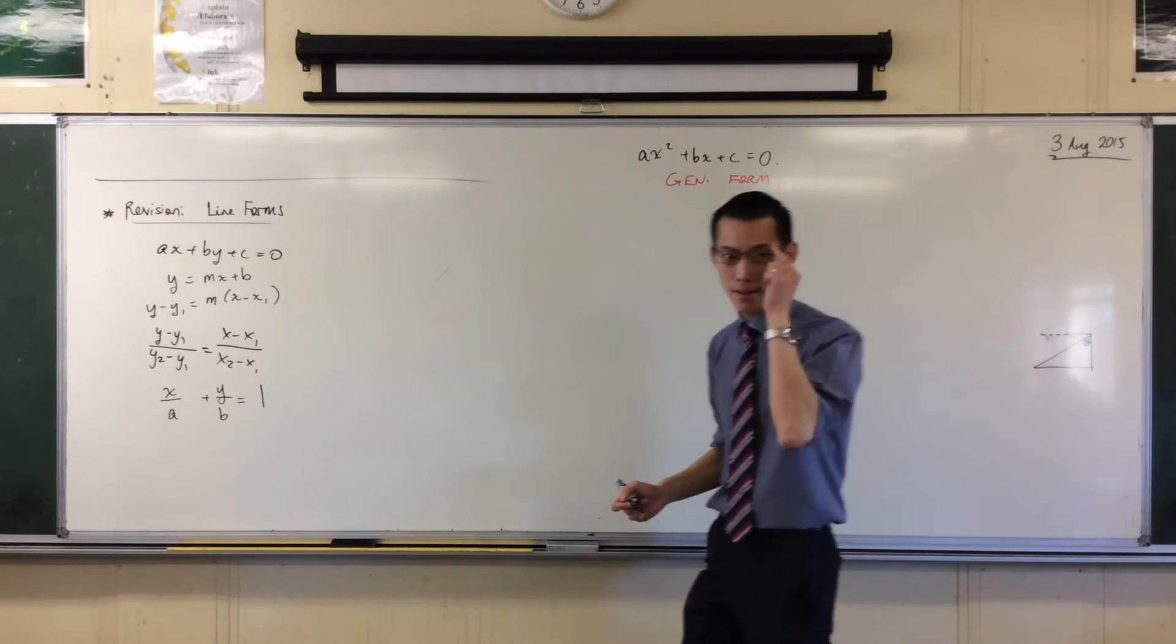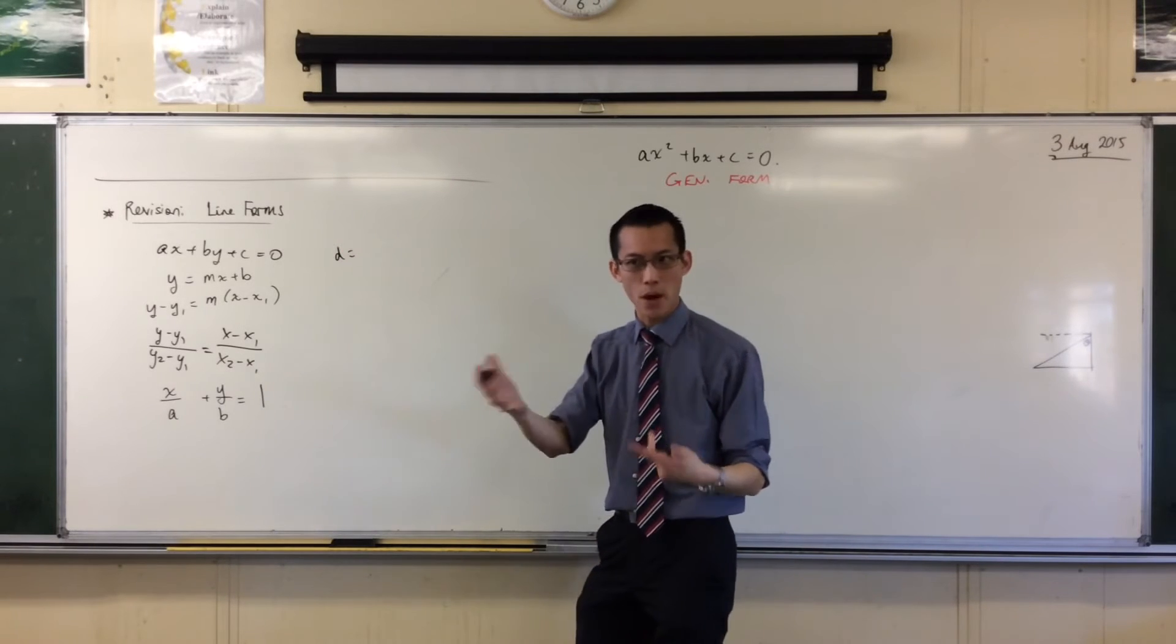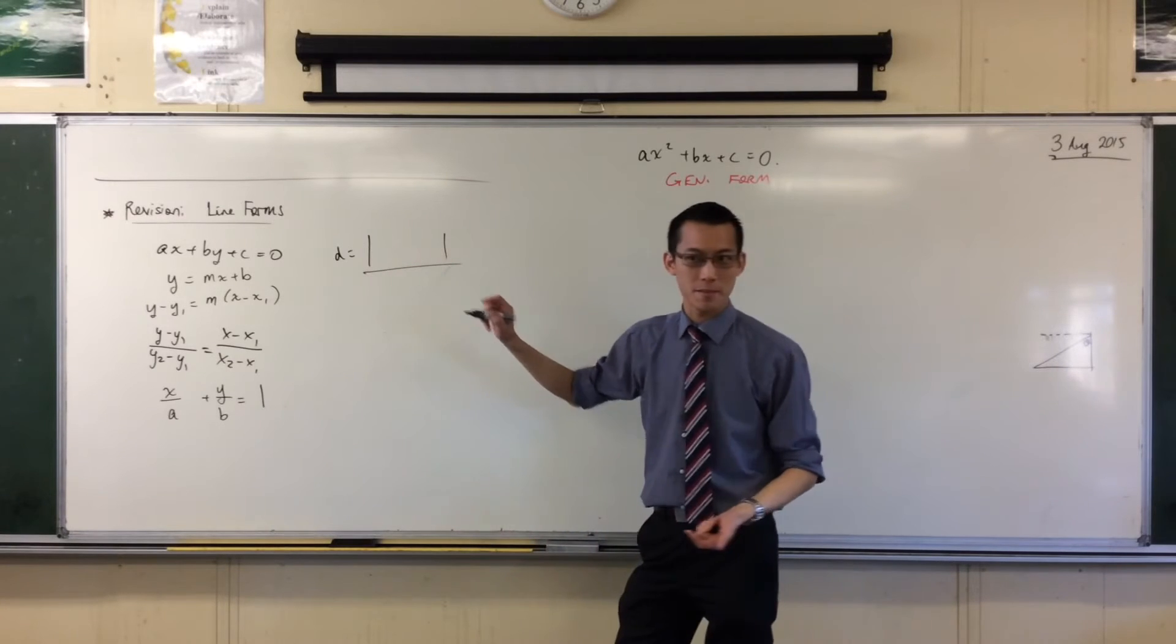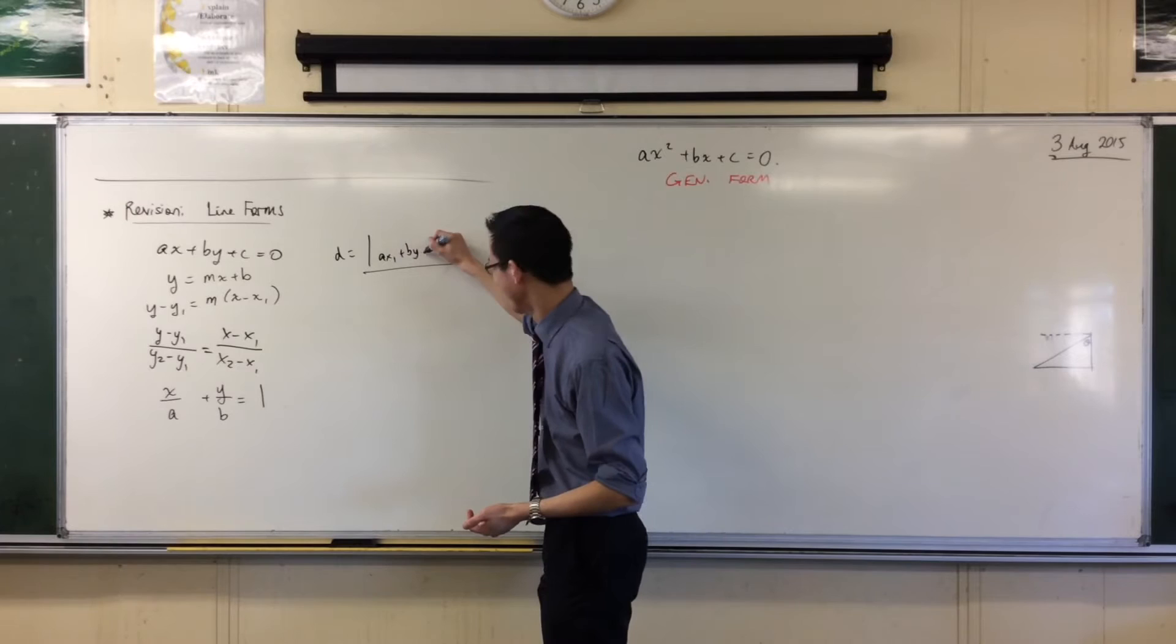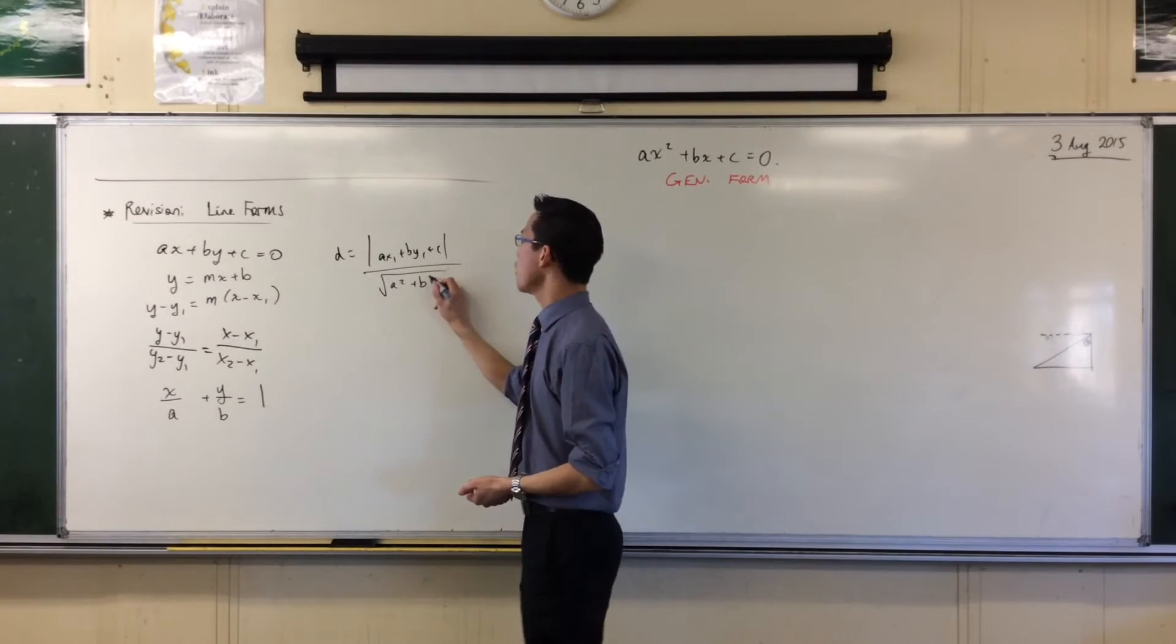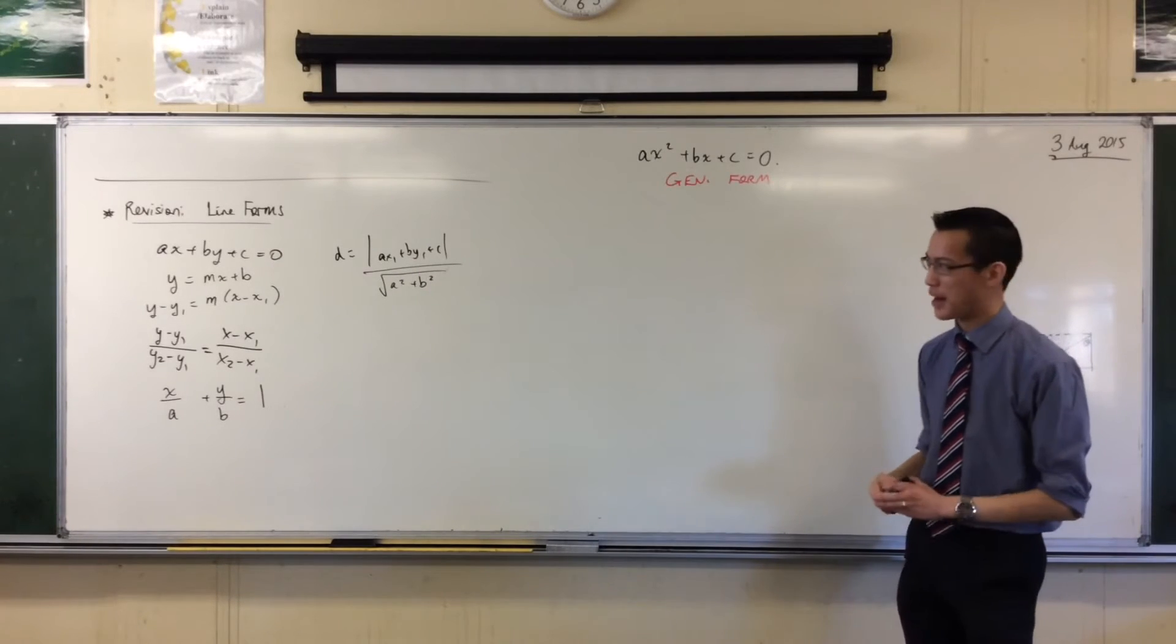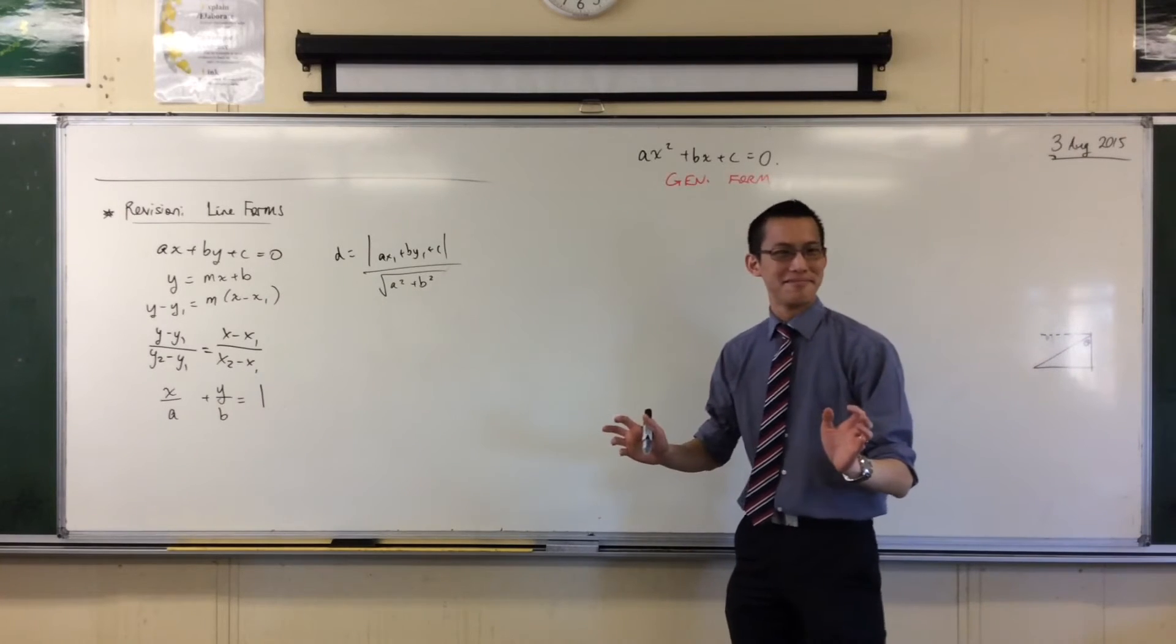For like distance. So, for example, if you want the distance between a point and a line, pull it out for me. What is it? So, if you want to do this, you must absolutely have it in general form. Otherwise, you're kind of up the creek without a paddle.